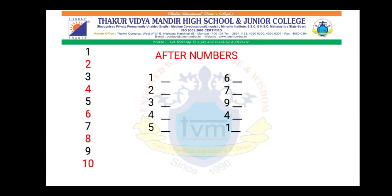Now let's fill in the after number in the blank. What comes after 1? 2. After 2, 3. After 3, 4. After 4, 5. After 5, 6. After 6, 7. After 7, 8. After 9, 10. After 4, 5. After 1, 2. So we learnt after numbers.